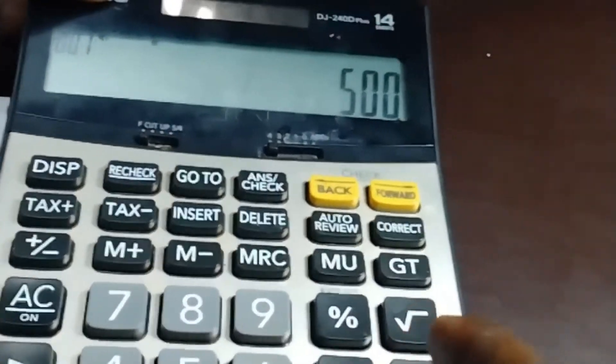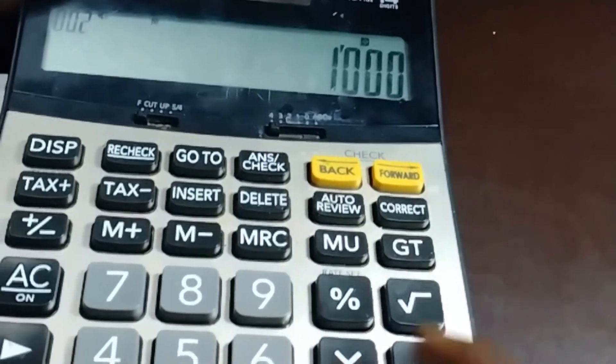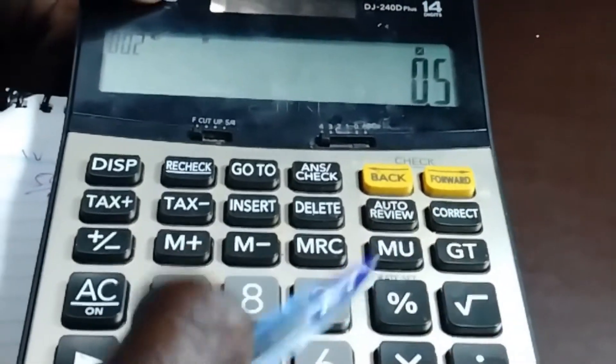Times 10. We are going to get 500 divided by 1000 times 10, we are going to get 5 mils.